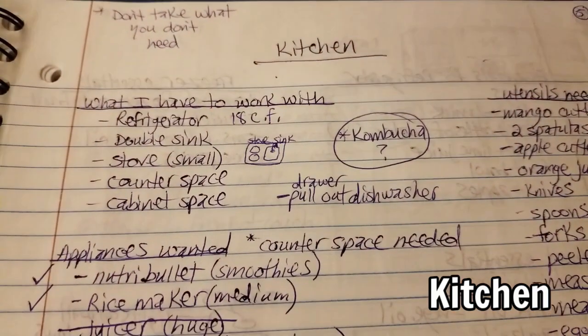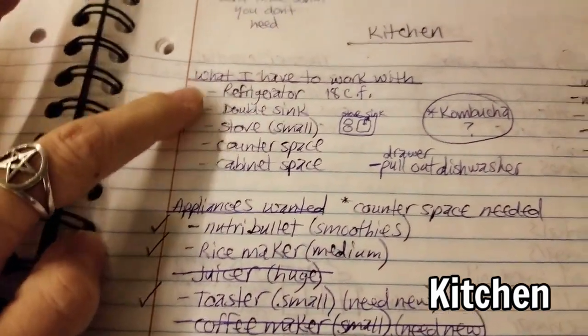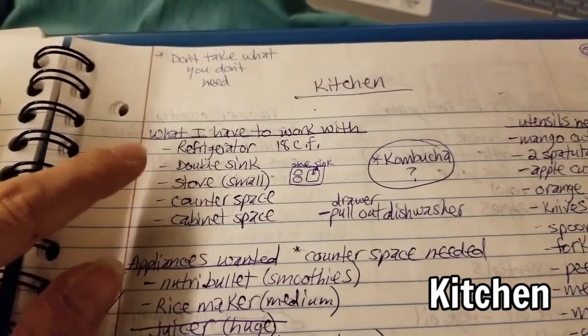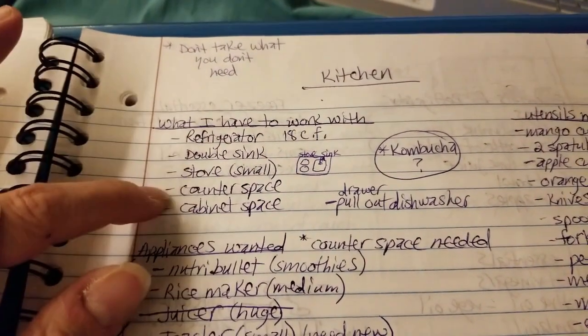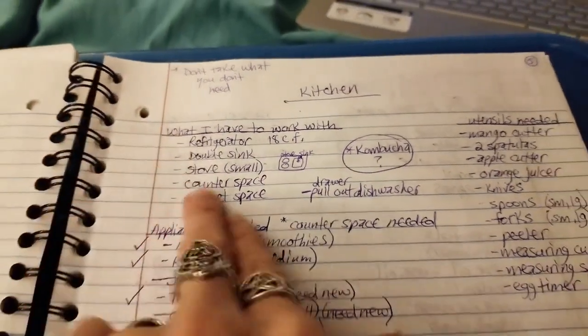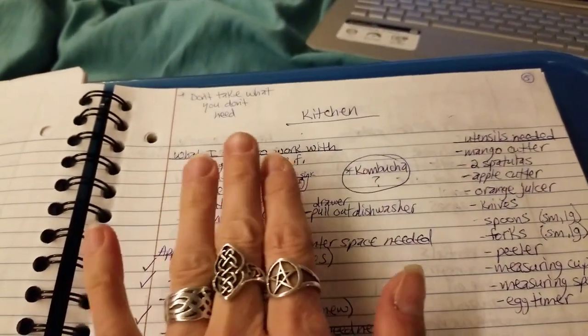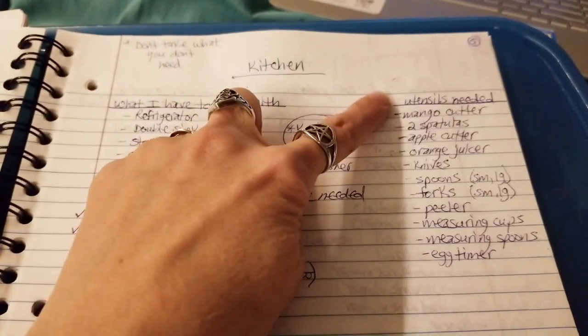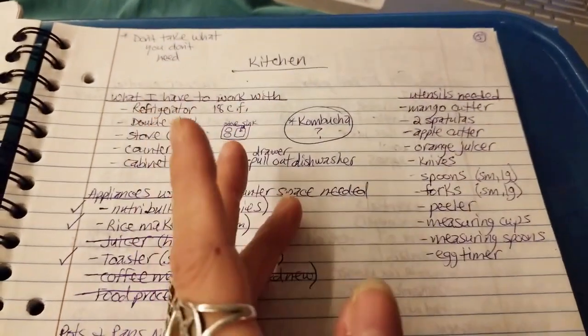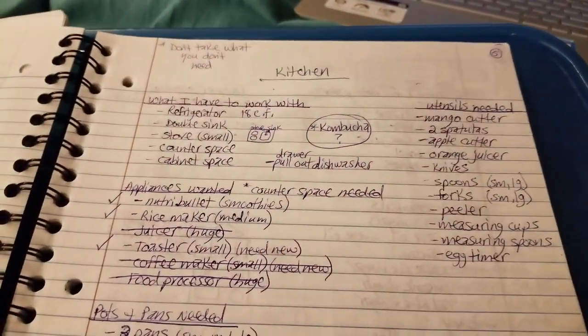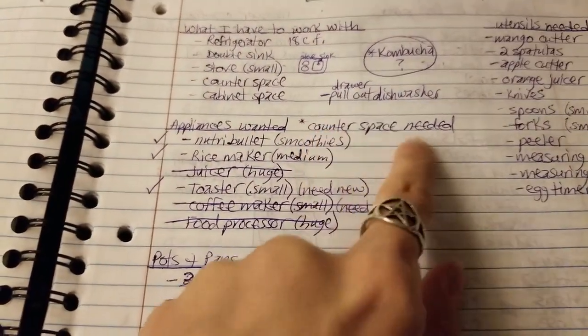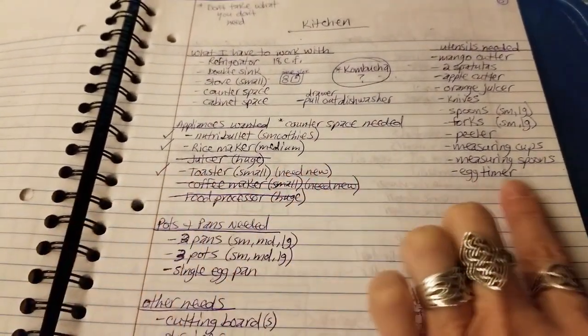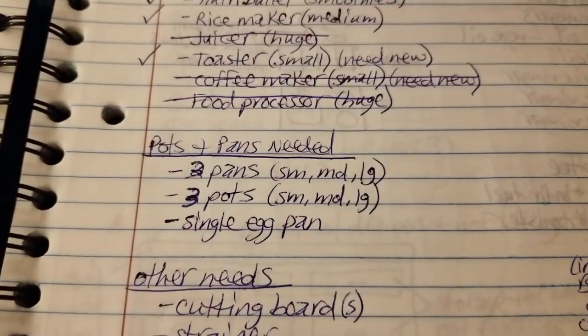So I started with the kitchen, and I just wrote lists - what I have to work with. So I knew I was going to get a refrigerator. I wanted a double sink, but I did not get one because I chose a farmhouse sink instead. Counter space, cabinet space. And when I figured out, when I wrote all this down, I knew that this is what I had to work with. What were the utensils that I needed? What do I cook with? What do I use the most? So these were the important things that I was going to be taking with me.